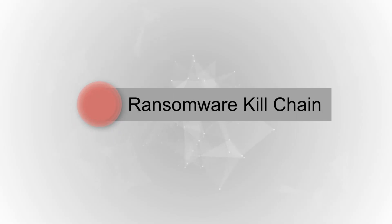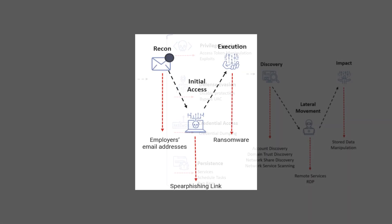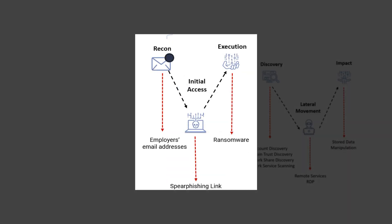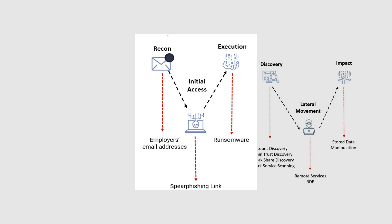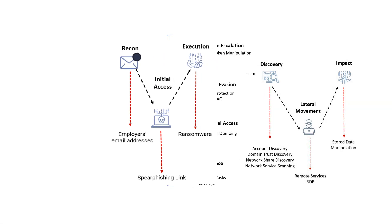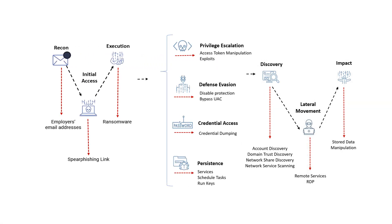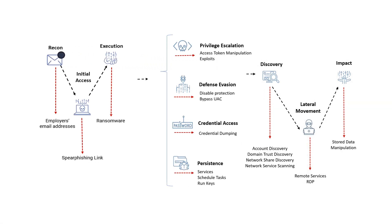Let's look at a ransomware kill chain. Ransomware payload can be delivered on endpoints via several methods such as a spear phishing email, exploiting remote desktop protocol, using drive-by attacks, or file-less malware.